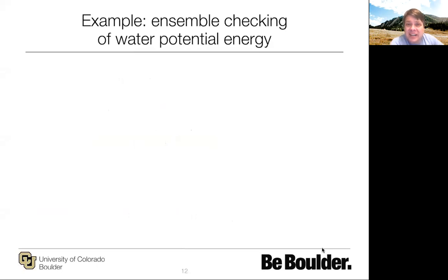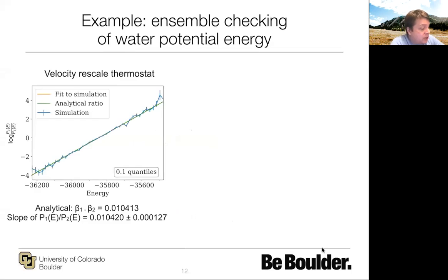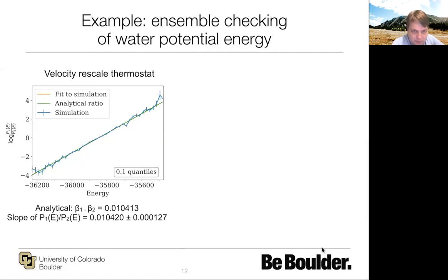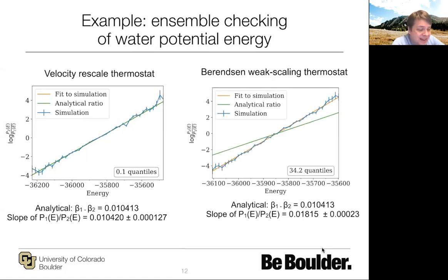Example: ensemble checking of water potential energy in NVT. With the velocity-rescale thermostat, the analytical slope (β₁-β₂) should be 0.010402. The simulation gives exactly that slope within noise — within 0.1 quantiles — and plotting the fit to simulation versus the analytical ratio shows essentially no difference. With the Berendsen weak-coupling thermostat, the analytical slope should be 0.01, but the actual slope differs by about 80%, and the difference between the analytical ratio and the simulation fit is clearly visible — off by 34.2 quantiles. Something is clearly going wrong.